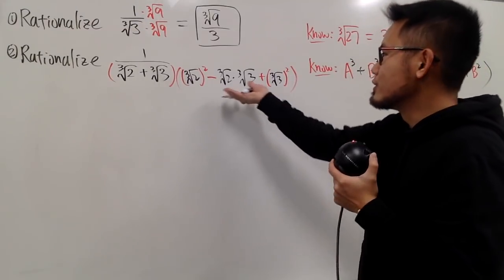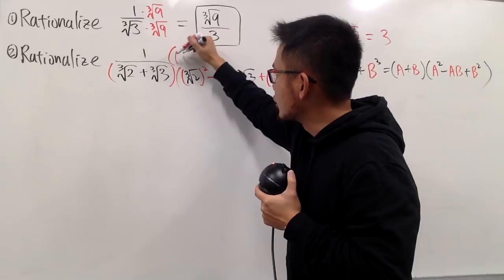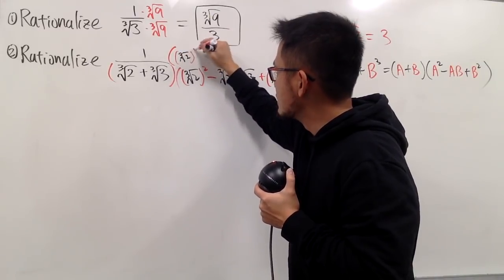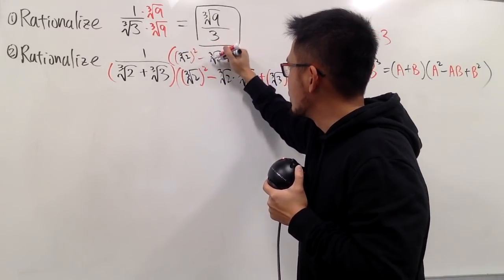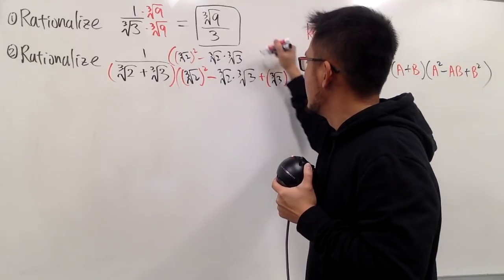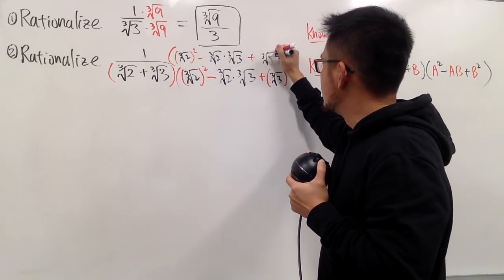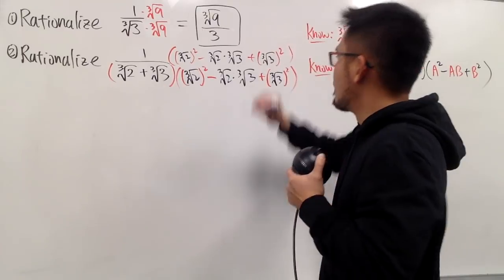And, of course, we produce the same thing on the top. So, here is the cube root of 2 squared minus the cube root of 2 times the cube root of 3. And then we add the cube root of 3 to the second power, okay?